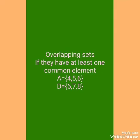Next is Overlapping sets. If sets have at least one common element, they are called overlapping sets. For example, we have sets A and B where set A has 4, 5, 6 and set B has 6, 7, 8. In these, 6 is common between the two sets. So they have at least one common element and are included in overlapping sets.